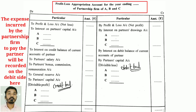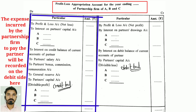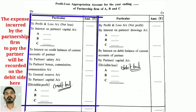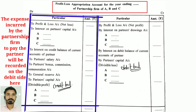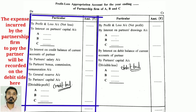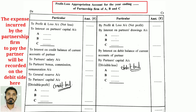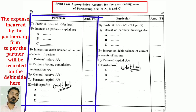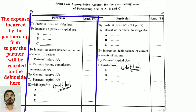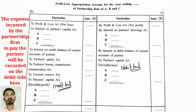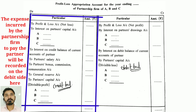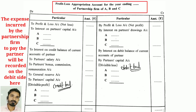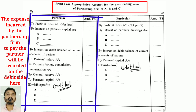On the debit side: To Profit and Loss Account (net loss); To Interest on Partners' Capital Account — partners A, B, and C; To Interest on Credit Balance of Current Account of Partners; To Partner Salary Account; To Partner Bonus, Commission, and Remuneration Account; To General Reserve Account.